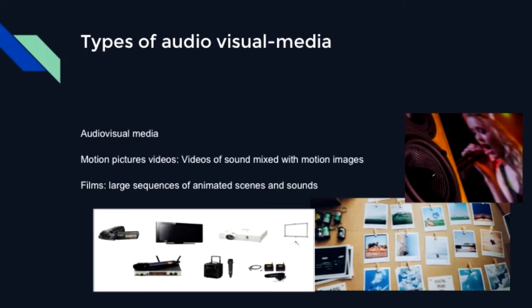Audio-visual media includes motion pictures and video — videos of sound mixed with motion images. Films are large sequences of animated scenes and sounds, also known as a movie or motion picture, which is a series of moving images shown usually with sound. Some people like to see new films at the theater as soon as they are released.